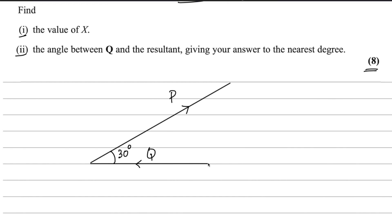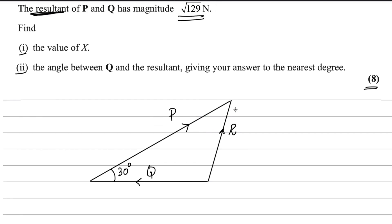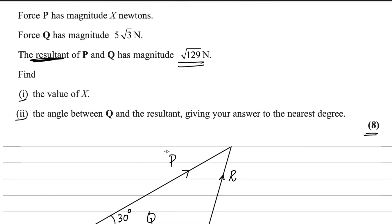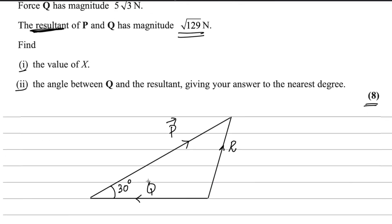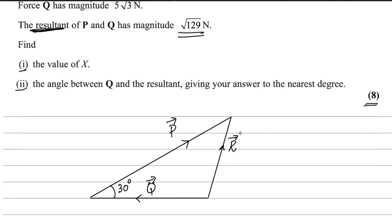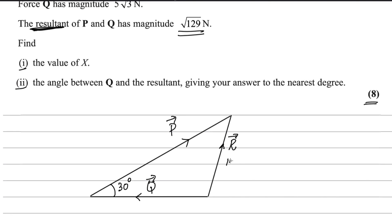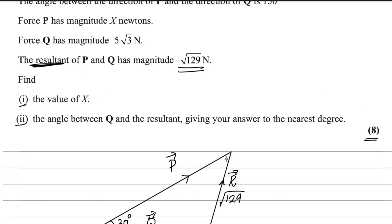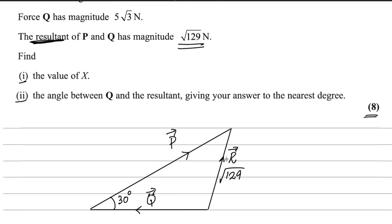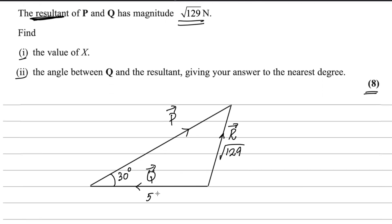Now the resultant could be found by joining the tail of Q with the head of P. Very simple. So this will be the resultant for these two forces. This is vector R. Better use arrows to represent the vectors. Vector R magnitude is root 129, Q magnitude is 5 root 3, and for this vector it is X.